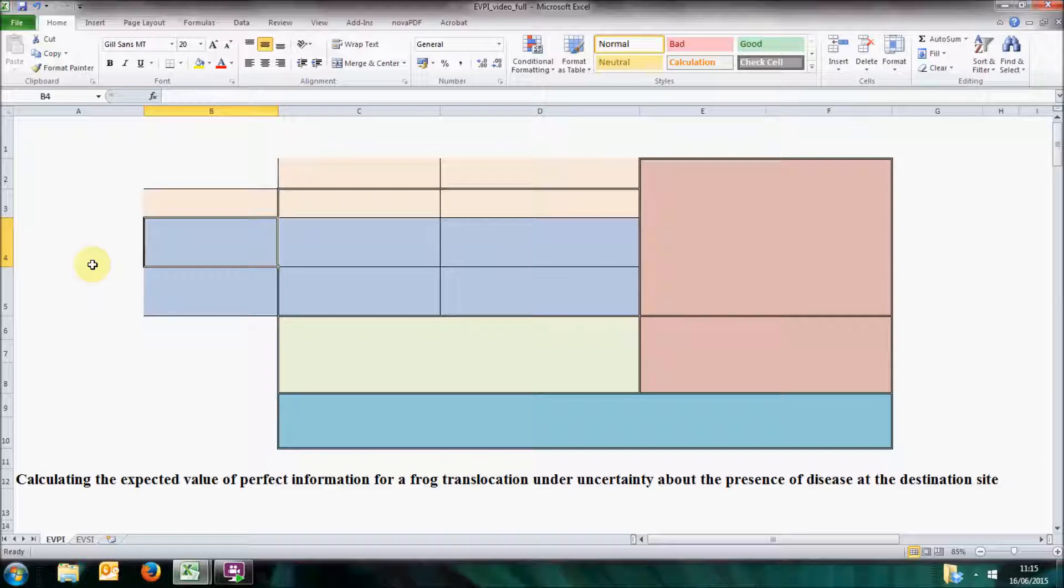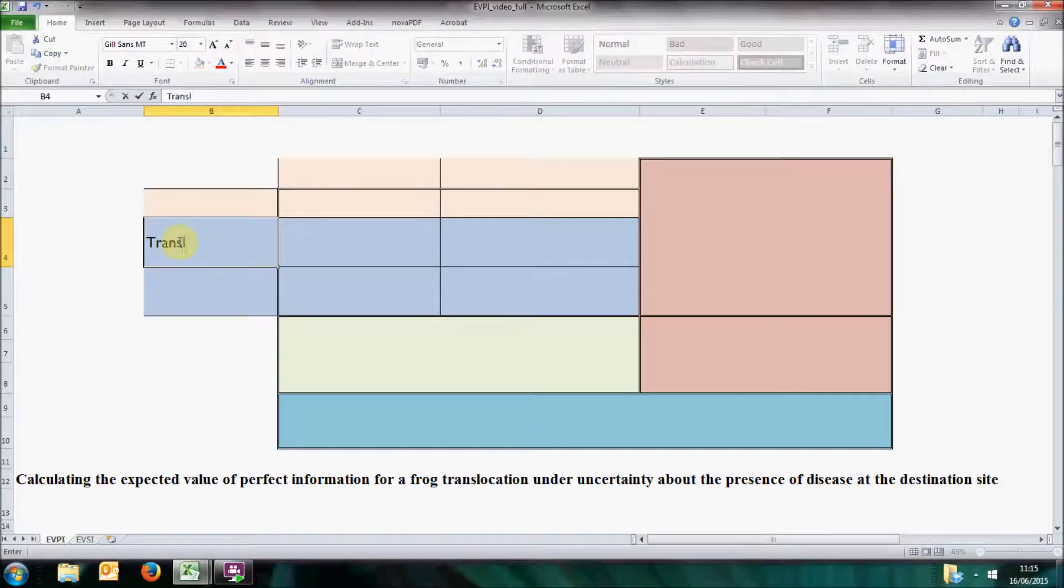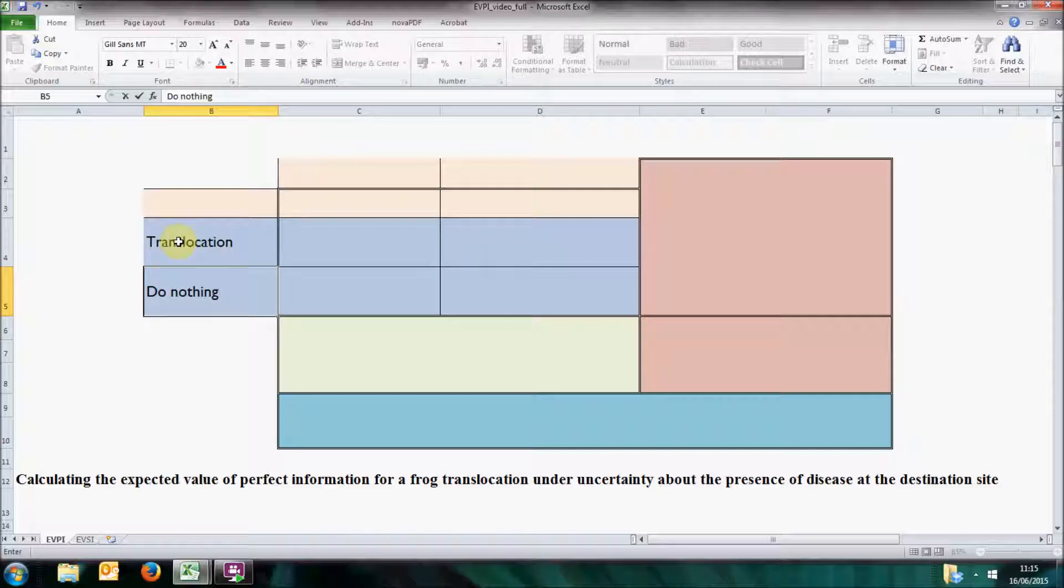Now the first thing we need to do is to define our actions. If the existing population has say 100 individuals, we could translocate 50 of them to a new site and try to establish a new population there. Or we could do nothing, and for this example we will keep this simple set of actions.